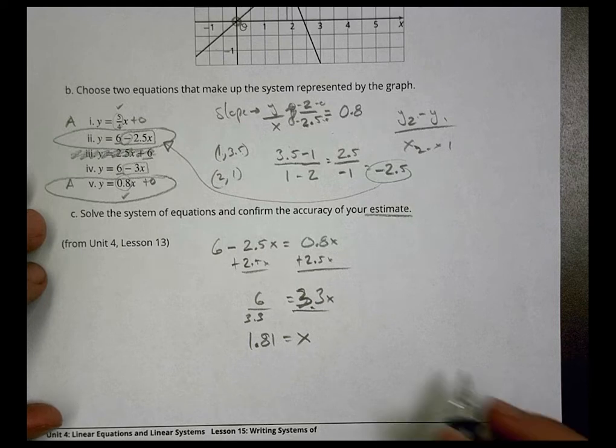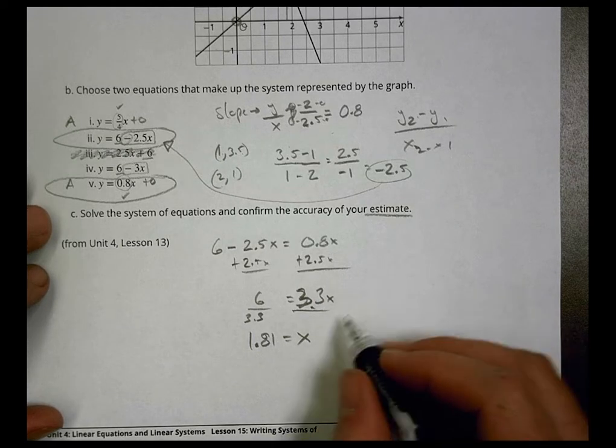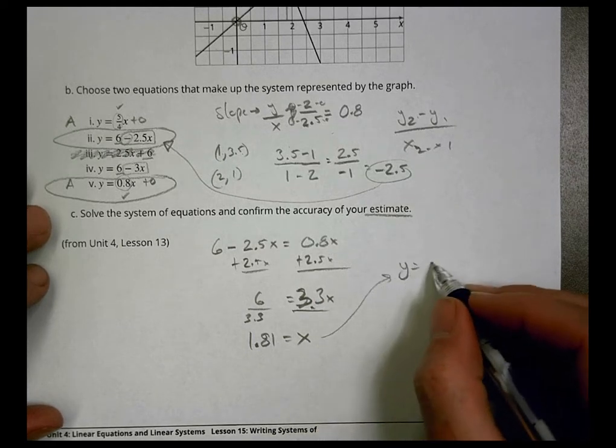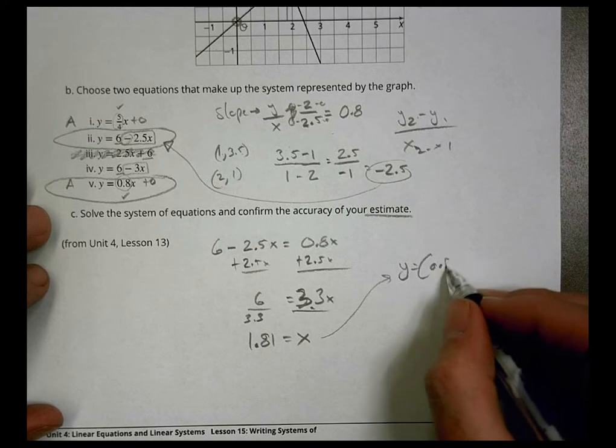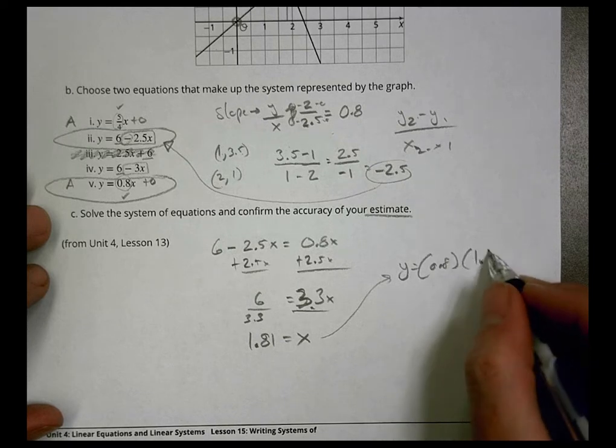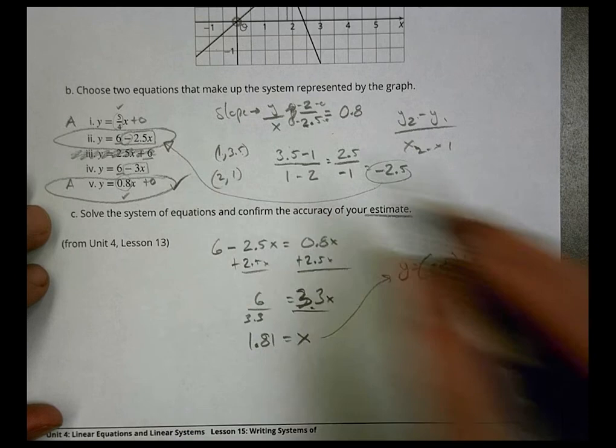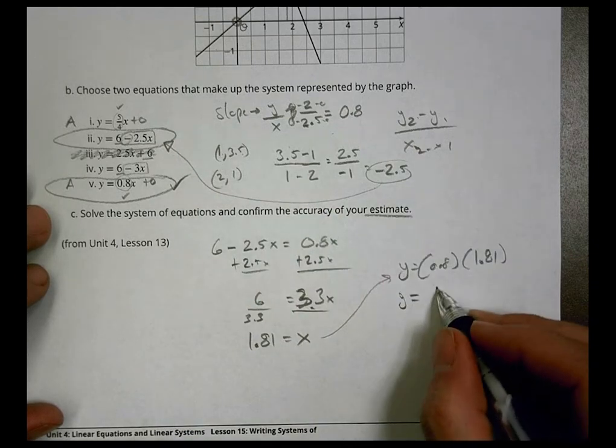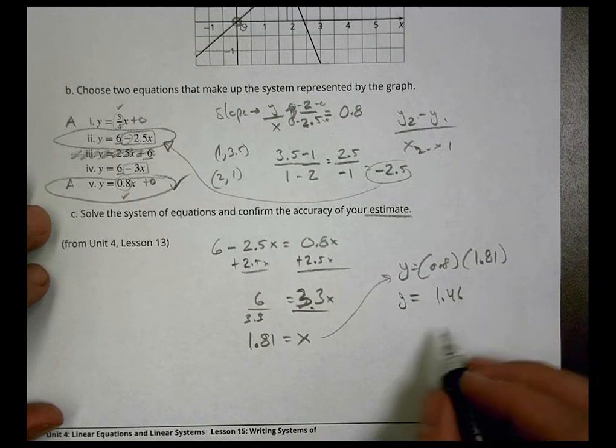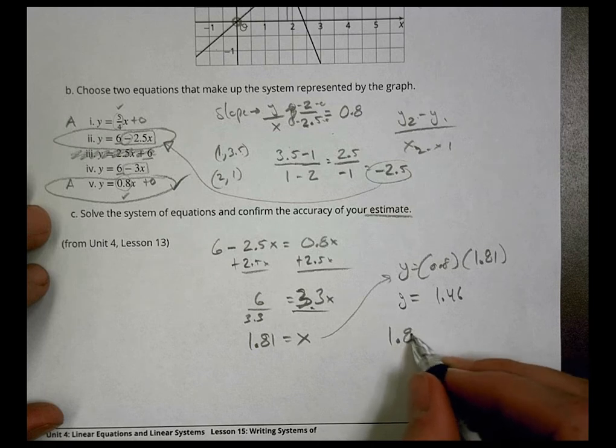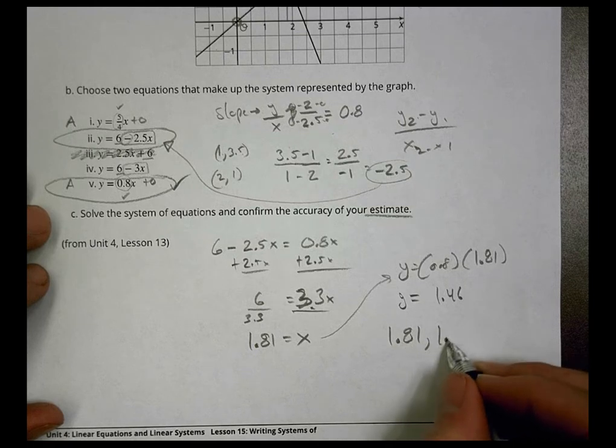And then to see how that works, we can plug that in. We can do y equals 0.8 times 1.81 using this equation right there, which means y equals 1.46. So the actual answer would be 1.81 comma 1.46.